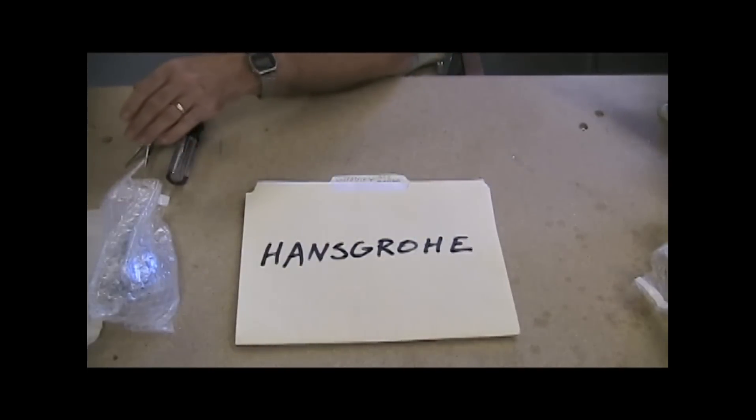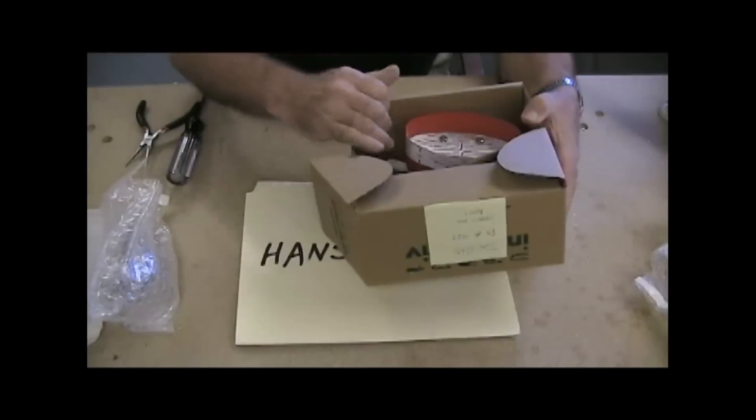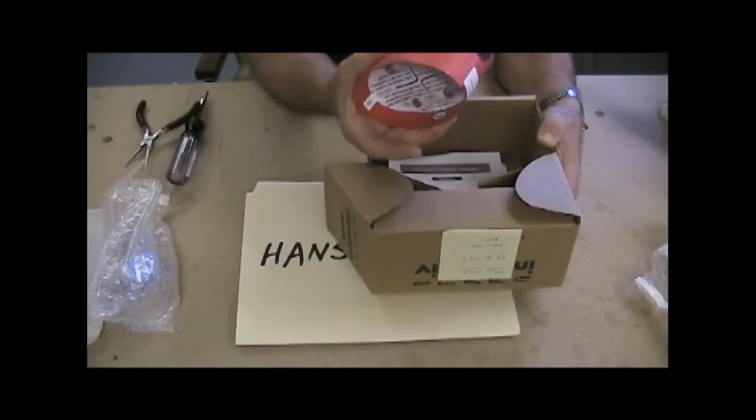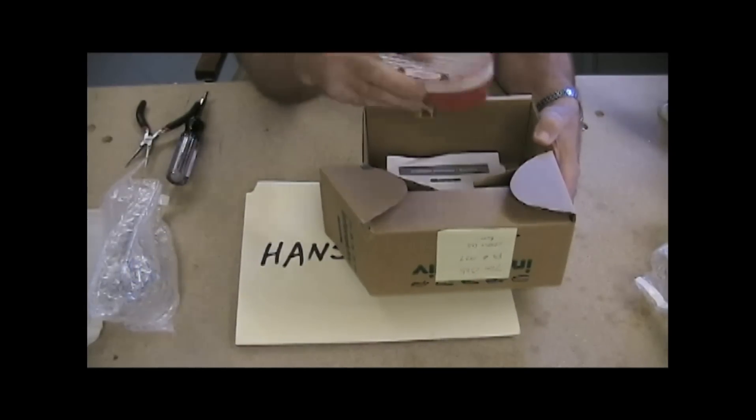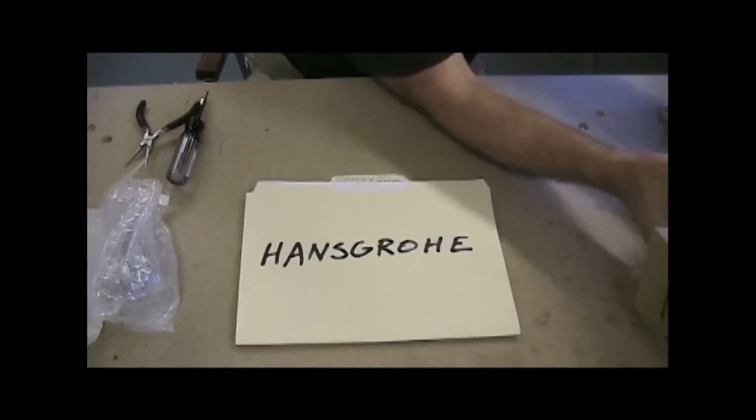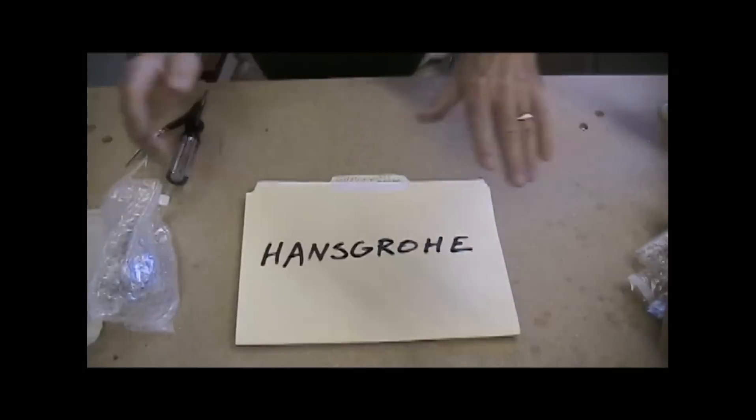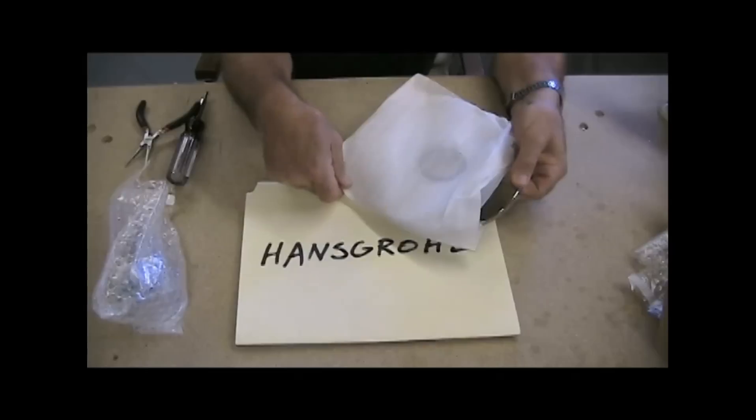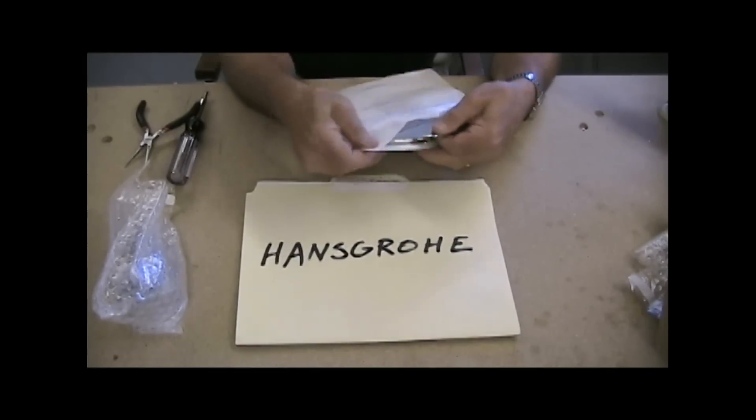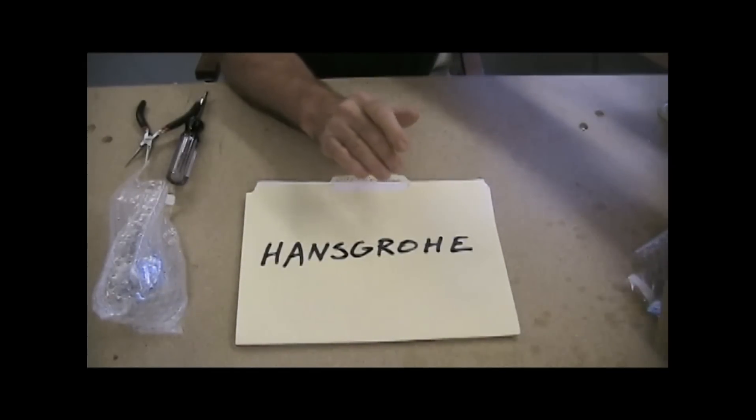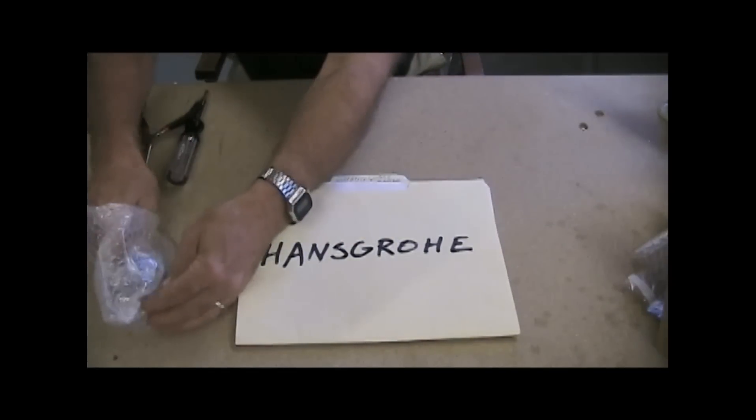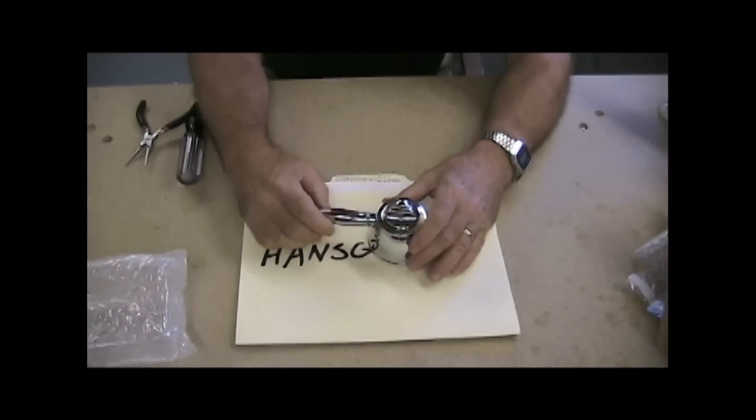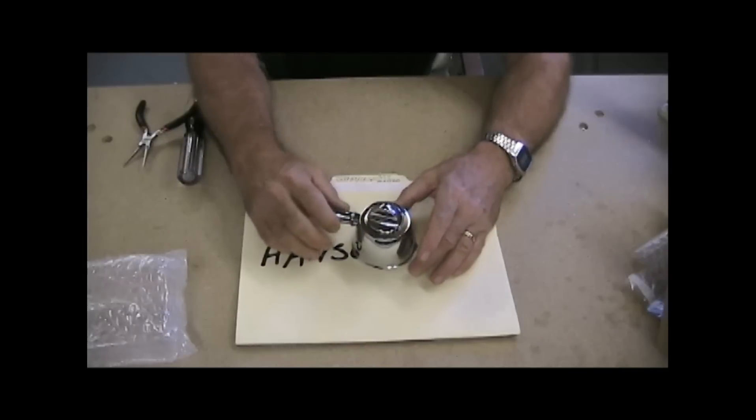It comes in two boxes like a lot of the other ones. This is the rough end box, which is what the plumber needs to get going. Nothing special about that. And then it comes with a trim box, all the fancy parts in it. This one happens to be chrome, and we'll take a look at their handle because that's the most important thing about the Hans Grohe.